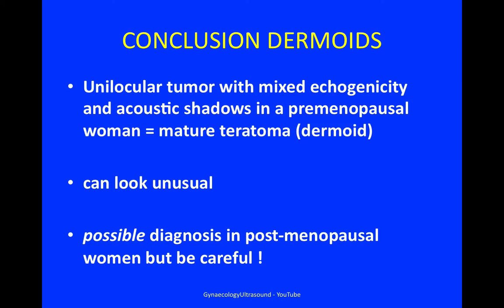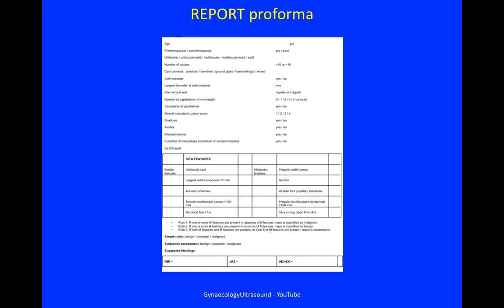In conclusion, a dermoid is typically a unilocular tumour with mixed echogenicity and acoustic shadowing in a premenopausal woman, and on simple descriptors this would come out as a dermoid. Dermoids can look unusual, and it's possible to diagnose one in a postmenopausal woman, but you have to be very careful not to miss other pathology. If you pause the video and copy this down, this is my proforma for reporting, very useful to help define using IOTA criteria what the adnexal mass looks like.